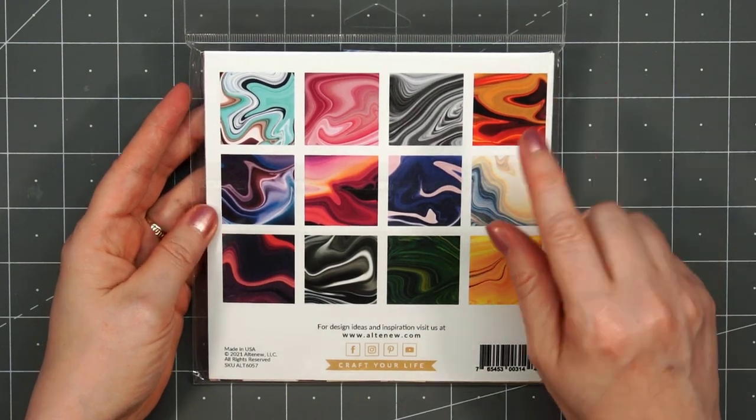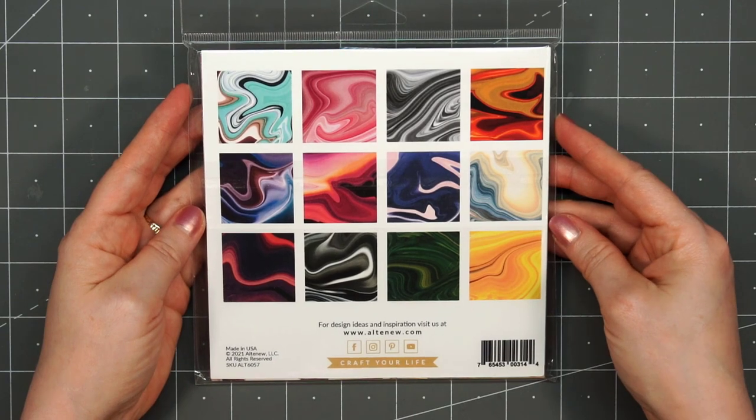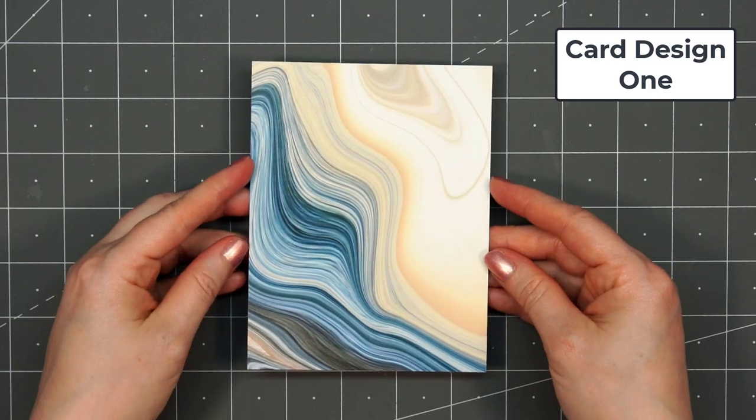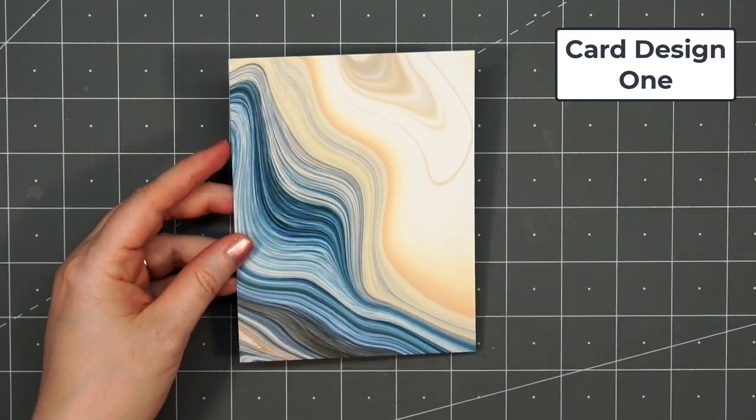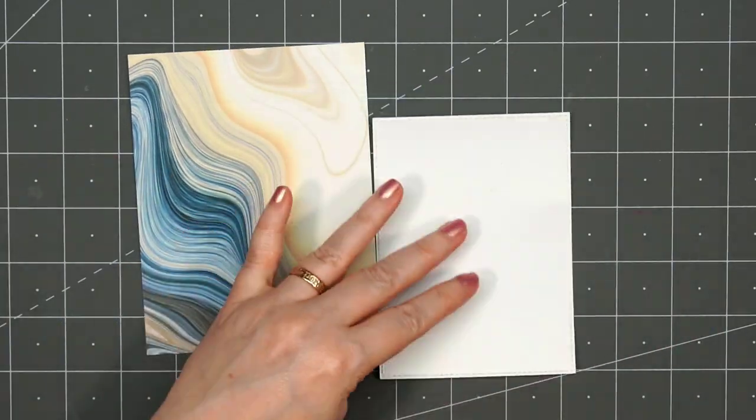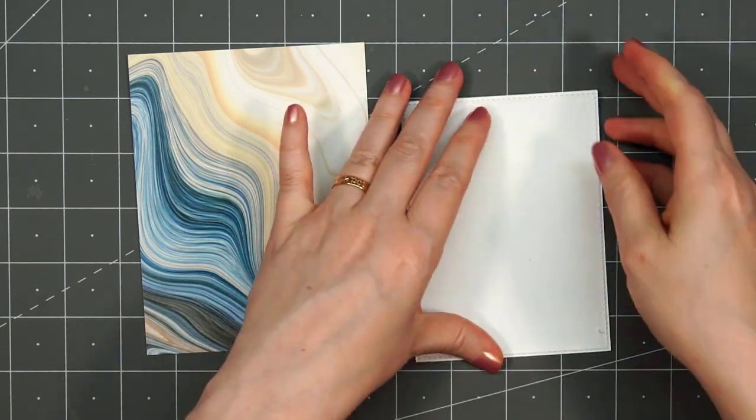I love when the companies make these beautiful backgrounds where I don't have to do all the work. I'll be using the pattern paper that has the yellow, blue, and a little bit of brown. I've cut this down to an A2 size background, so 4 1/4 inches by 5 1/2 inches.